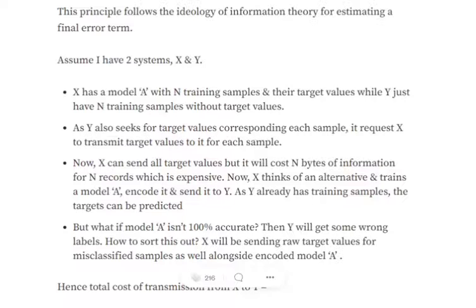Now in case of system Y, it only has just the training samples but not the target values. So now X can send all the information about the target values for the training data set to system Y with a cost of n bytes of information, where n is the total number of records. So one byte for every information set passed.